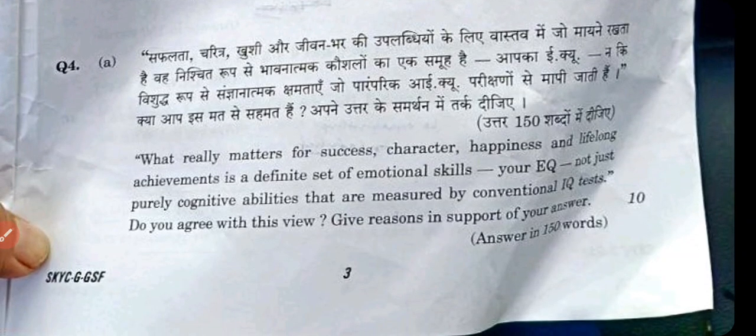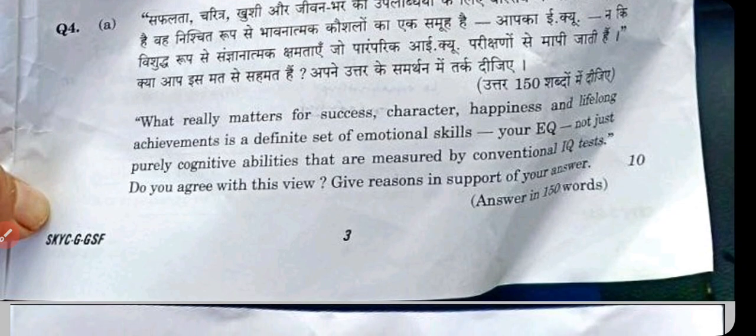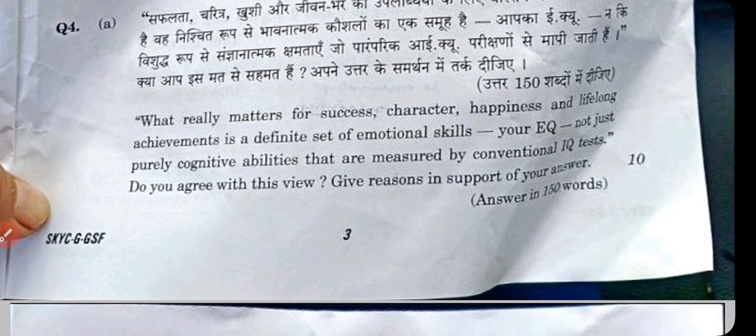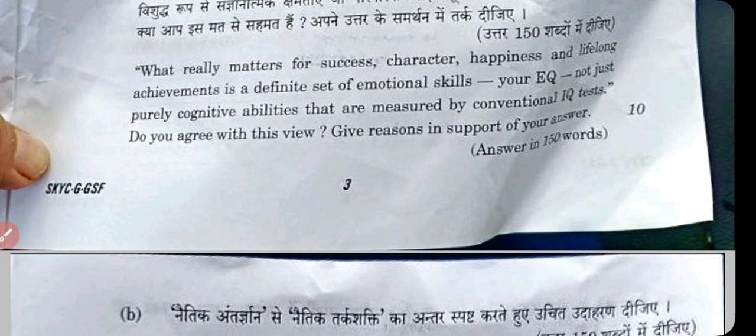In question 4A: 'What really matters for success, character, happiness, and lifelong achievement is emotional skills — your EQ, not just cognitive abilities measured by conventional IQ tests.' Do you agree? Character is the best foundation for success. This is why our character should be correct. Happiness is our right, because happiness belongs to each of us and no one can steal it from us.